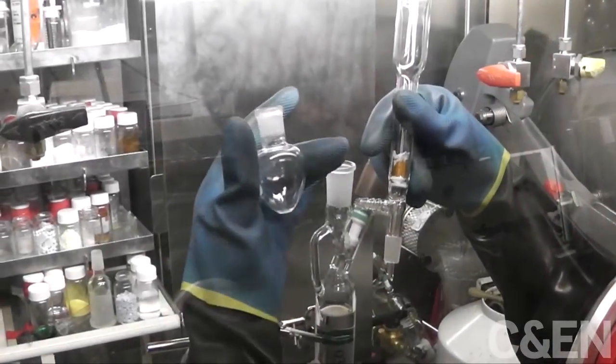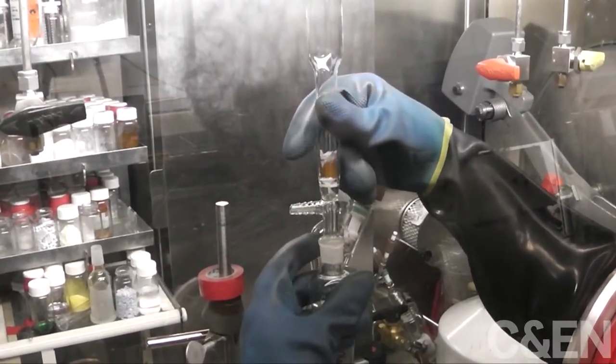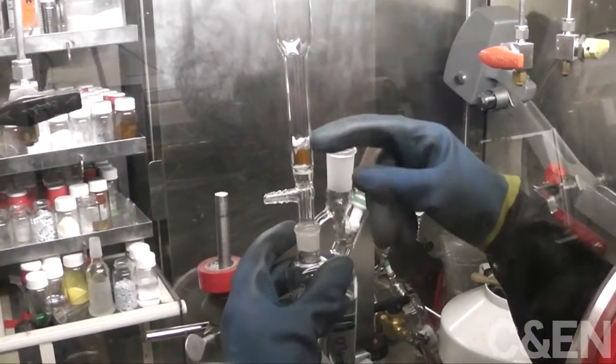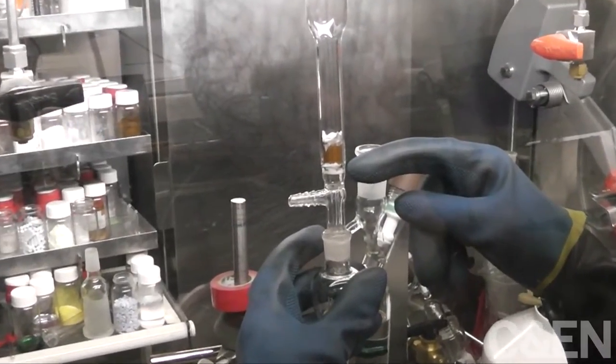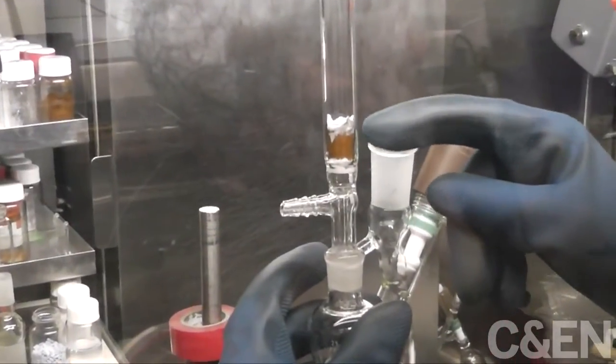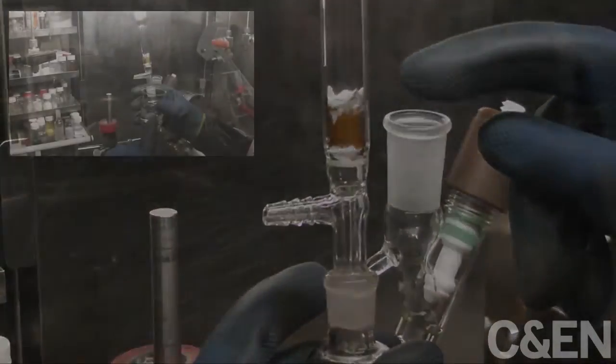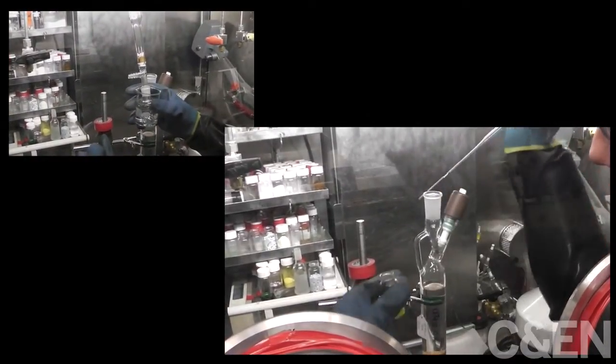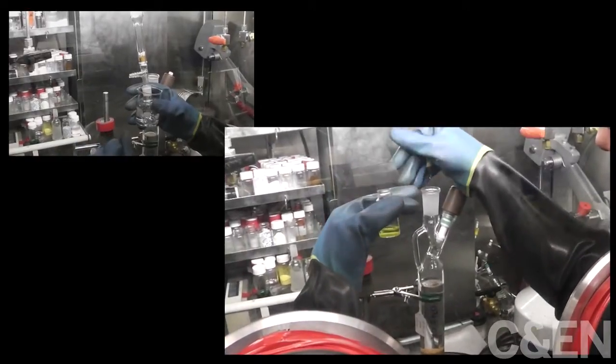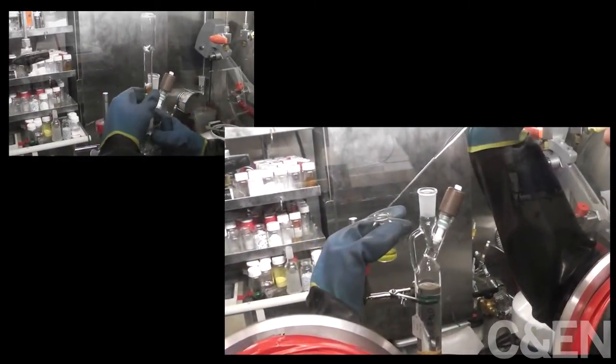McDonald developed an approach modeled on flash chromatography, which separates chemicals rapidly by pushing a mixture through a column. He packs a column with the potassium graphite reducing agent and puts it in the glove box freezer to chill. He then dissolves the precursor terbium plus 3 compound with the 18 crown 6 ligand to make a yellow solution. He puts that in the freezer as well.